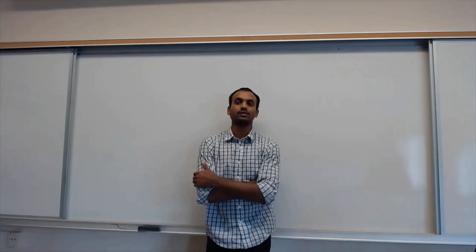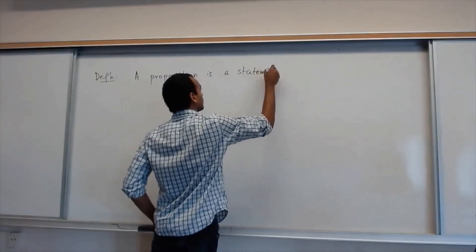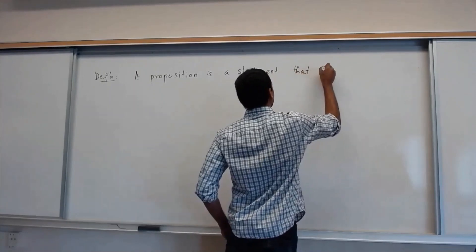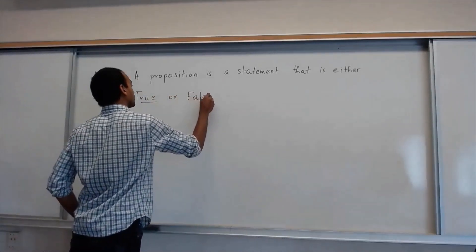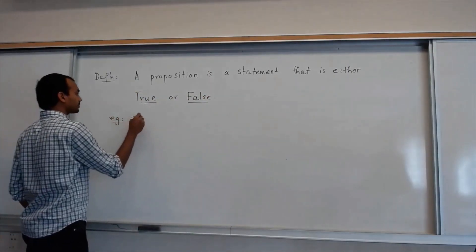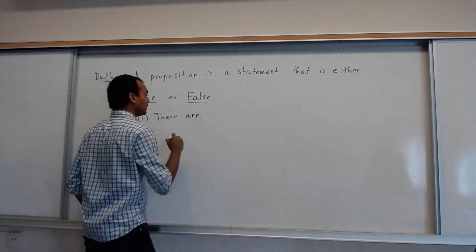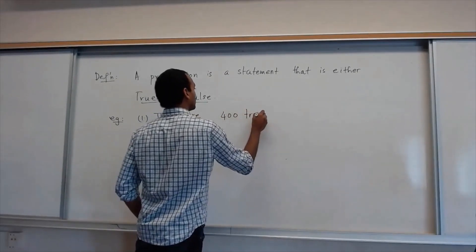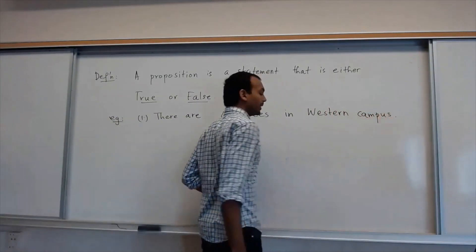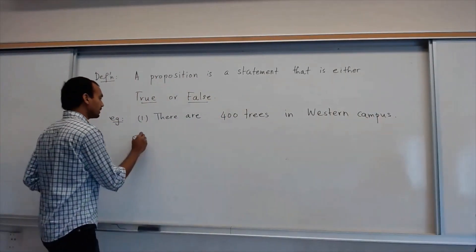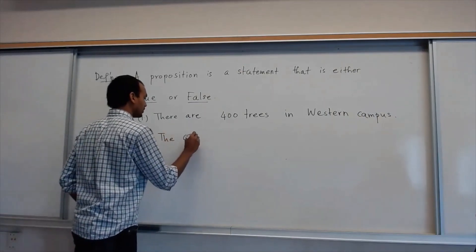Let's see what sort of things we can do with propositions. The definition of a proposition is: a proposition is a statement that is either true or false. Some examples — example one: there are 400 trees in western campus. This may or may not be true, but it definitely has a truth value. A second one is the CS209 class